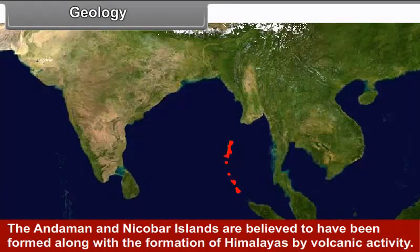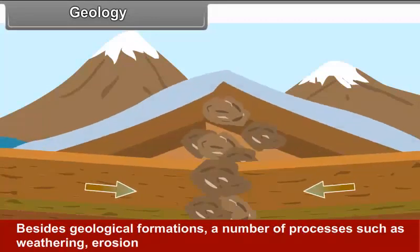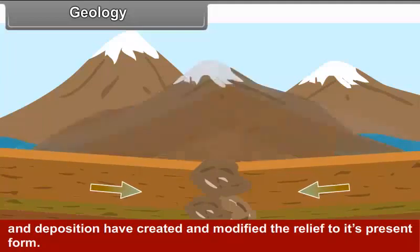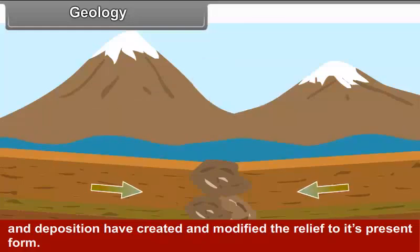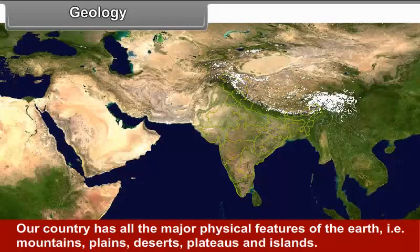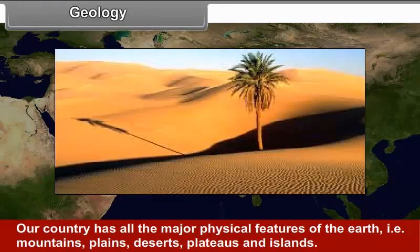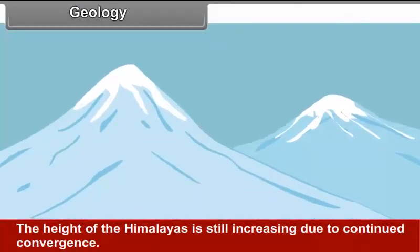Geologically, the Peninsular Plateau is one of the most ancient and stable landmasses of the Earth's surface. The plateau is mainly made of igneous and metamorphic rocks with smoothly rising hills and broad valleys. The northward movements of the Indo-Australian plate have also changed the location and size of the Indian subcontinent over millions of years. The movement of the plate led to stresses in the crust, leading to folding, faulting and volcanic activity.